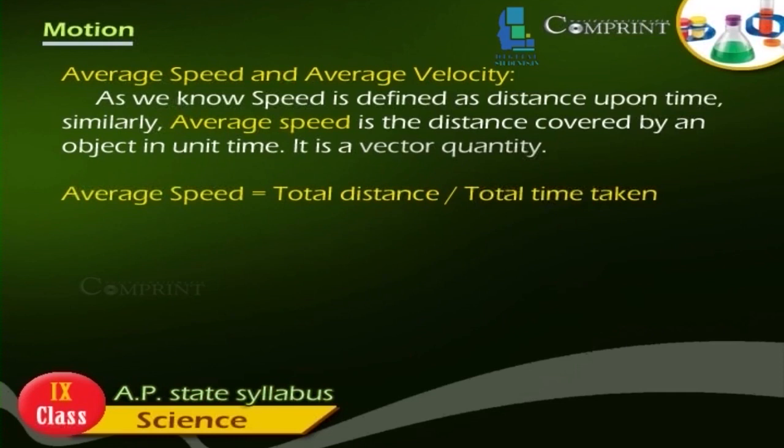Average speed and average velocity: As we know, speed is defined as distance upon time. Similarly, average speed is the distance covered by an object in unit time.